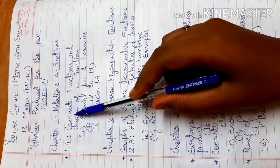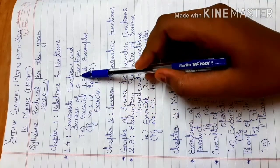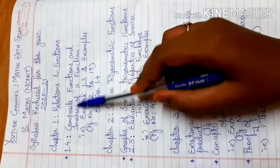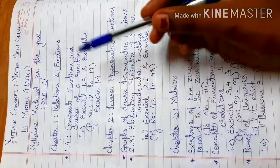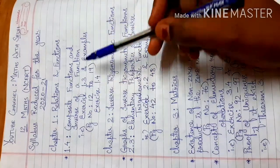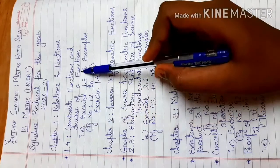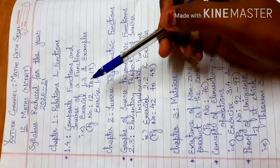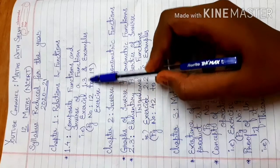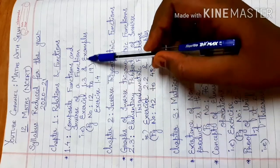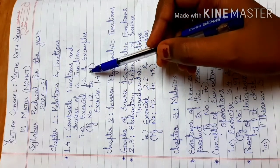The first topic is Composition of Functions and Inverse of a Function. We will talk about Composite Functions — g of f, f of g — and Inverse of a Function — f inverse, g inverse. There is Exercise 1.3 and other related examples.